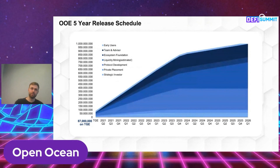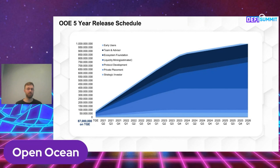This is a visualization of our release schedule. On the token generating event there will be 87 million tokens in circulating supply, and the remaining tokens will be distributed on a schedule of three to five years going forward.